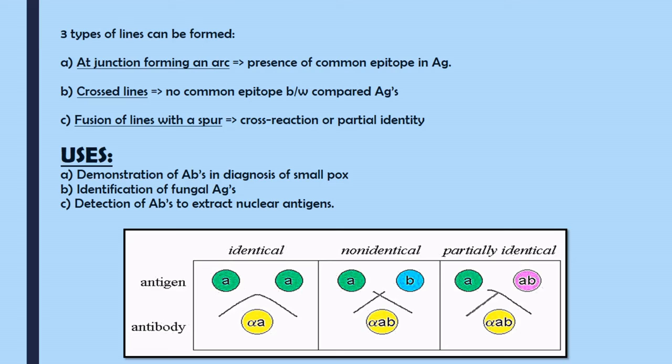Using Ouchterlony's method, we can demonstrate whether antigens in a patient sample are similar to commercially used antigens. This method has been used in diagnosis of smallpox, fungal antigens, and many other antigens. Today's lecture has covered the importance of immunodiffusion and the different methods based on its principle — whether single or double, radial or linear — which is extremely important when discussing antigen-antibody reactions.